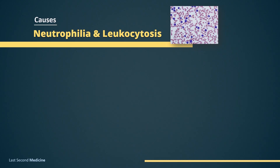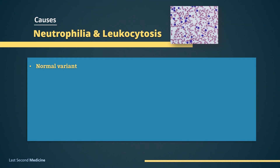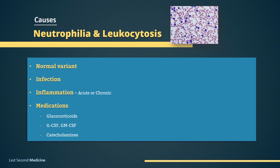Coming on to causes — causes of neutrophilia are many, but the common causes include these. It can be a normal variation in some individuals, or it can be due to infection, acute or chronic inflammation, medications such as glucocorticoids, recombinant granulocyte or granulocyte-monocyte colony stimulating factors, or due to catecholamines.